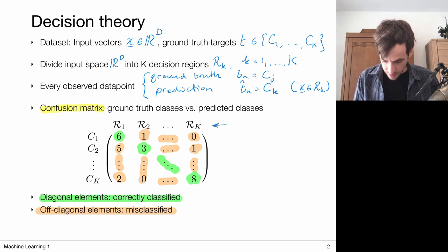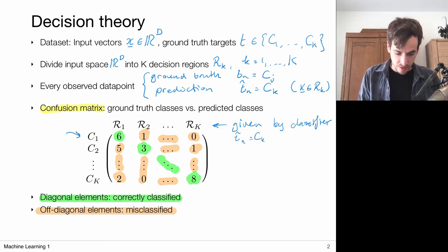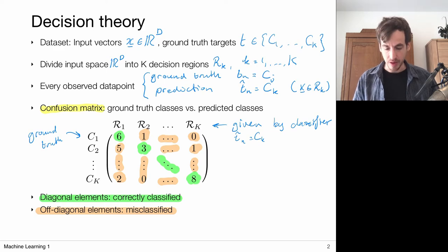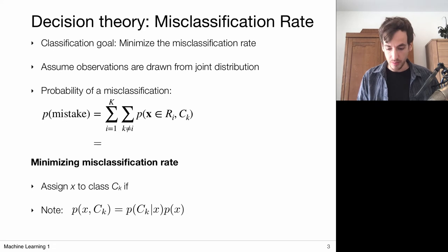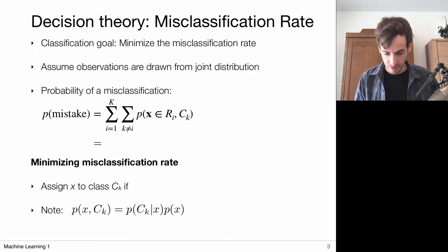The columns are given by the classifier — those are the t-hat predictions — and I check the corresponding ground-truths and count how many times each combination of prediction versus ground-truth occurs. Given this, let's think about what would be an optimal classifier. My classification goal would be to minimize the misclassification rate — to minimize the number of off-diagonal errors. That's my objective, and now I'm going to move on to a probabilistic viewpoint.